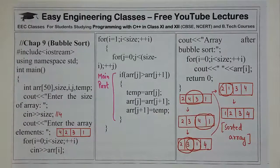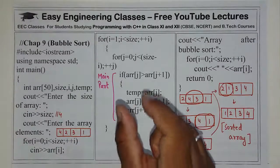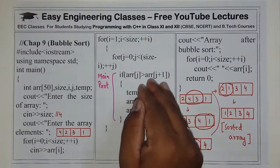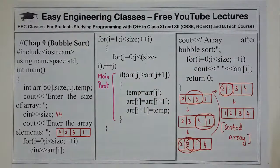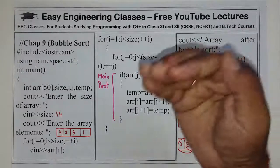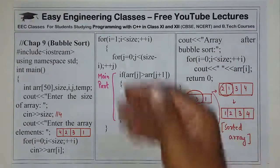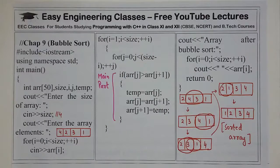काफी simple है. इसमें बस आपको इतना logic याद रखना है कि हर बार दो-दो elements का comparison होता है. Adjoining elements के comparison के लिए हम array[j] को compare करेंगे array[j+1] से. मतलब अगर 0 है तो 0 को 1 से compare करोगे, 1 को 2 से — यानी हर element को उससे अगले वाले से compare किया जाता है.